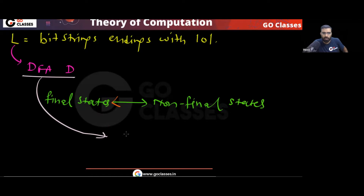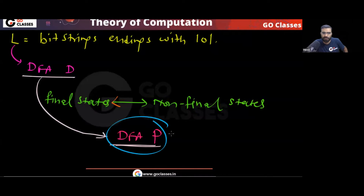After making final states non-final and non-final states final, we get a new DFA — let's call it DFA P. The language of this new DFA will be L complement. So this is already something we know.